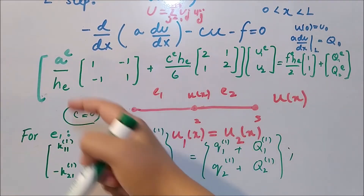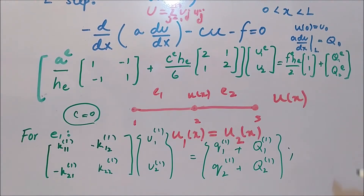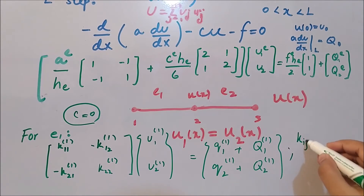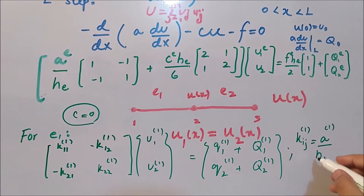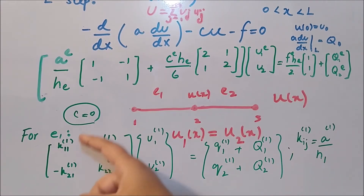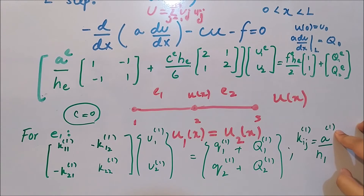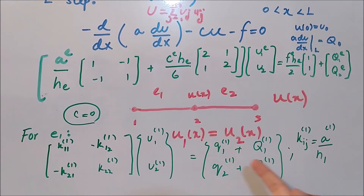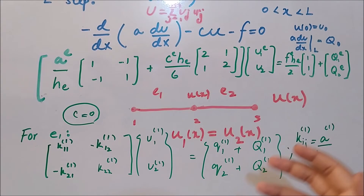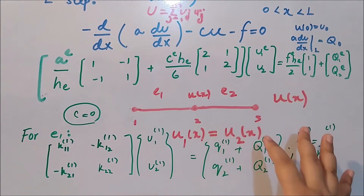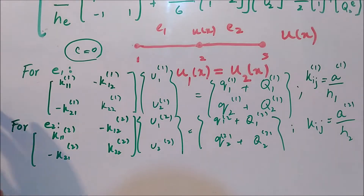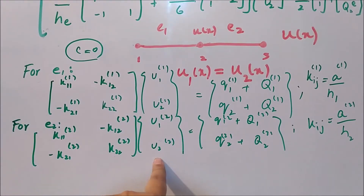Here we assume that k_ij, the element of the stiffness matrix for the first element, equals A¹/h₁. So small k equals A with superscript 1 divided by h with subscript 1, representing element one. Small q represents f·h/2. This is for element one, and the same can be written for element two — the difference is that the superscript becomes 2, with the same structure for the stiffness matrix, displacement vector, and force vector.